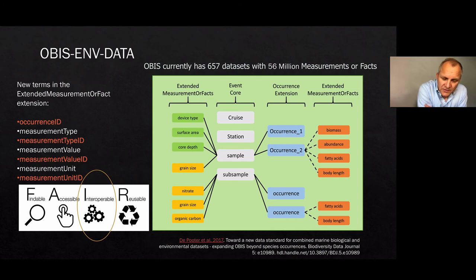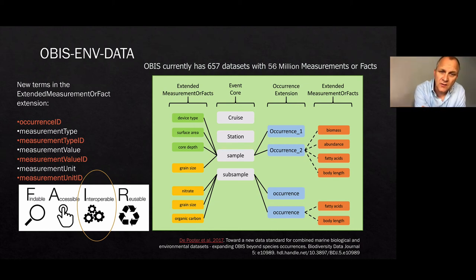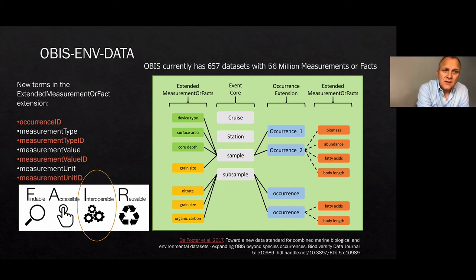A major development necessary to support EOVs was to expand our data format. In the past, OBIS was mostly only dealing with occurrences — the blue part. But when the Event Core came out, we found that really interesting because we could use the Event Core to document the monitoring protocols. We looked into the Measurement or Facts extension to document all the biotic and abiotic measurements, as well as sampling facts.